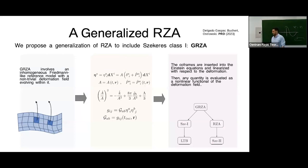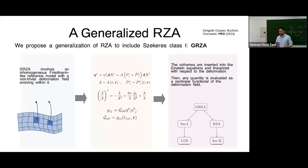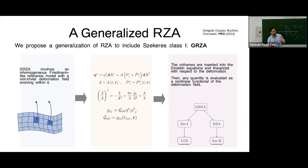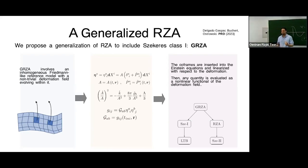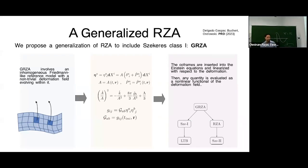The relativistic Zel'dovich approximation reproduces Szekeres class two, which contains Kantowski-Sachs but not class one which contains LTB — the most interesting class. So we looked for a higher-level approach that contains both Szekeres class one and the relativistic Zel'dovich approximation. In the Zel'dovich approximation the deformation field evolves on the FLRW background. The generalization uses a position-dependent Friedmann-like background — a local scale factor satisfying a generalized Friedmann equation with parameters depending on spatial coordinates.